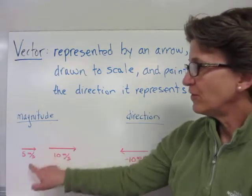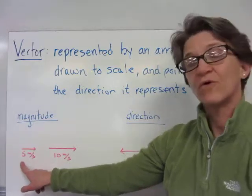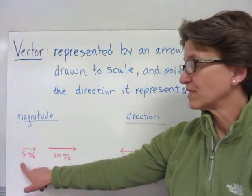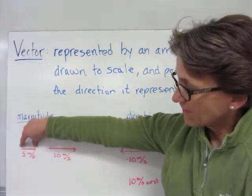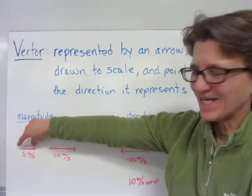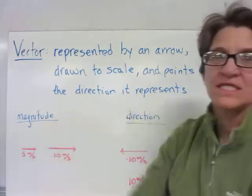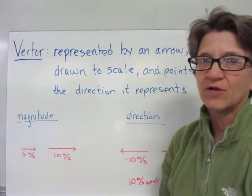The magnitude, for example, I made this a scale of 1 centimeter equals 1 meter per second squared. You can see the 5 meters per second arrow is half as long as the 10 meters per second arrow. They're both pointing in the same direction.